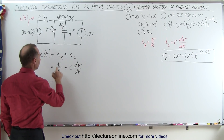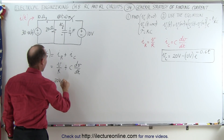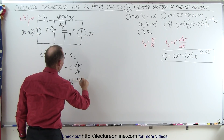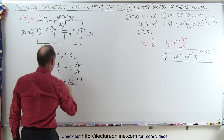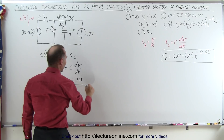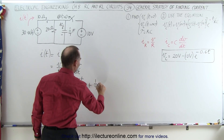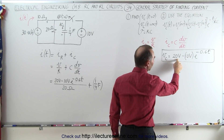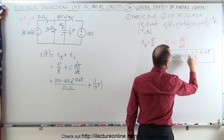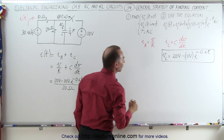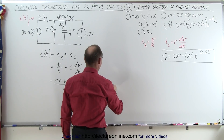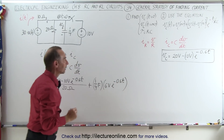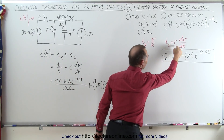So next we write what these are equal to. We have the voltage, which is 20 volts minus 10 volts times e to the minus 0.6t, all divided by the resistance of 20 ohms, plus the capacitance of one quarter of a farad times the derivative of the voltage with respect to time. The derivative of the constant 20 volts is zero, and the derivative of negative 10 volts times e to the minus 0.6t gives us plus 6 volts times e to the minus 0.6t.